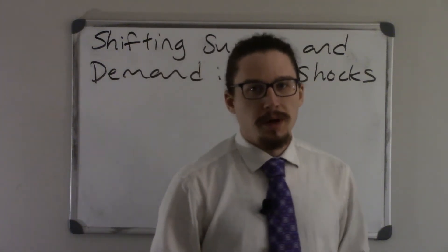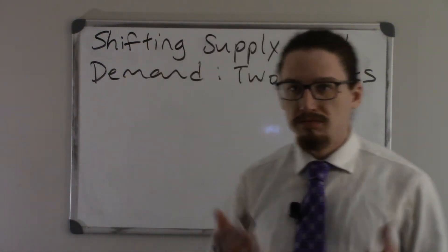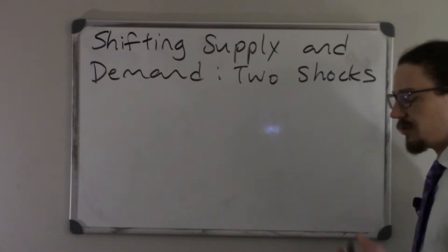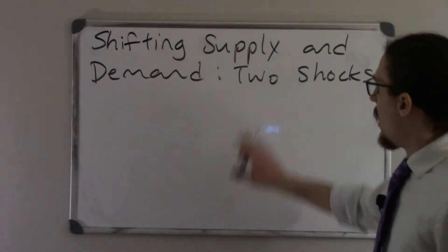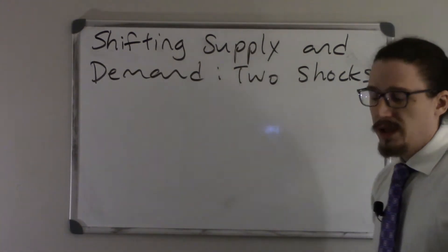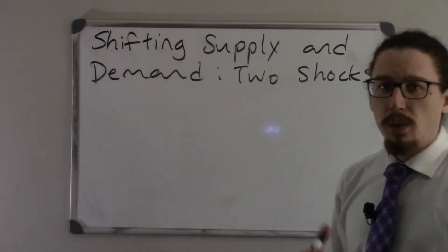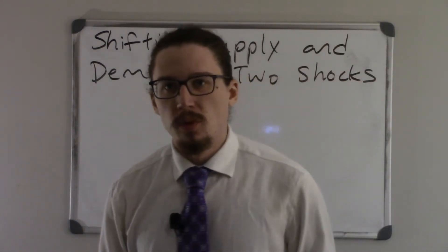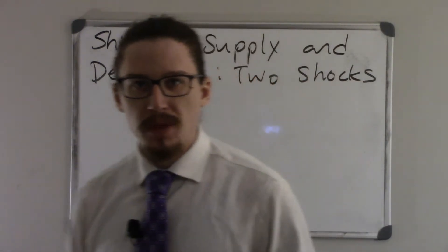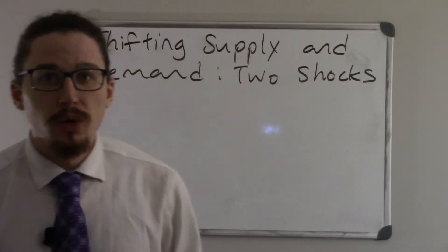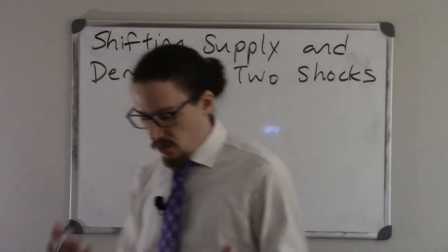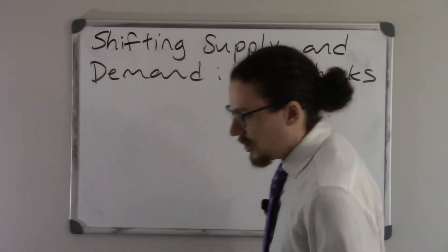In this video, we're going to wrap up our discussion on equilibrium, or wrap up chapter 4. We're going to be looking at what happens to equilibrium when we have two shocks. So in the last video, we only had one shock at a time. What if we have two?